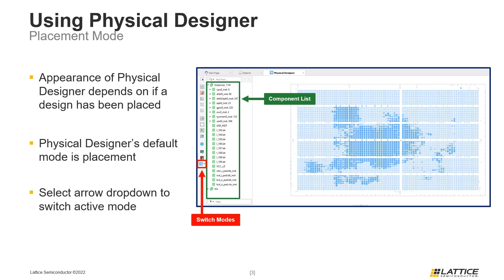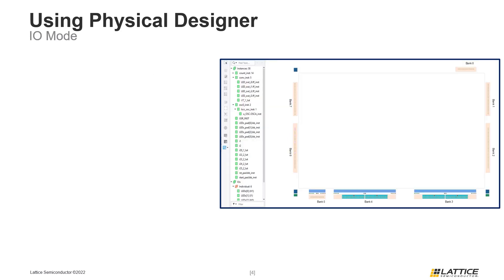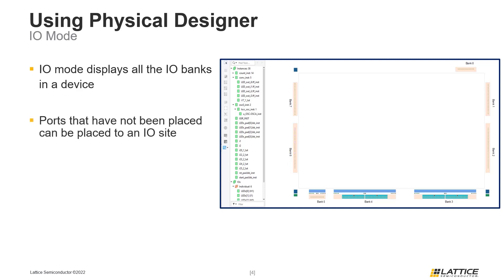Once the active Physical Designer mode is switched, the content in the main portion of the Physical Designer window will be updated for the new mode. The second Physical Designer mode is I.O. mode, which is similar to placement mode except that only the I.O. banks for the project's active device are visible. The purpose of this mode is to manually modify where a design's I.O. ports are placed after place and route is complete. Any unplaced ports can be directly dragged from the list of components to a site in an I.O. bank to place an I.O. port in that site. Another useful feature of I.O. mode is that it can be used to view where I.O. ports were placed after place and route.